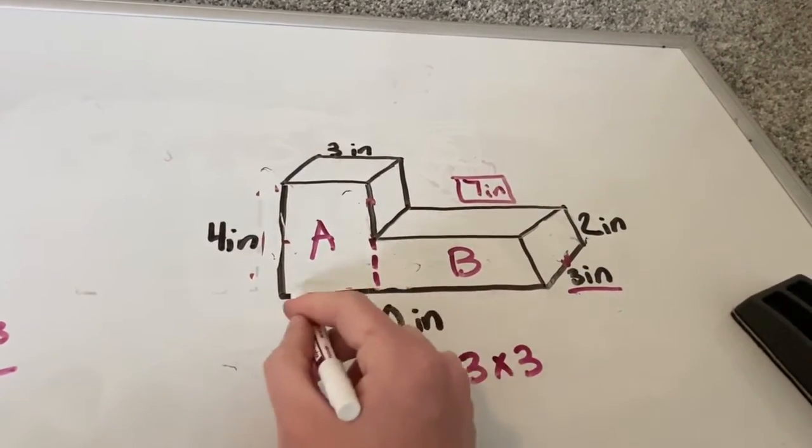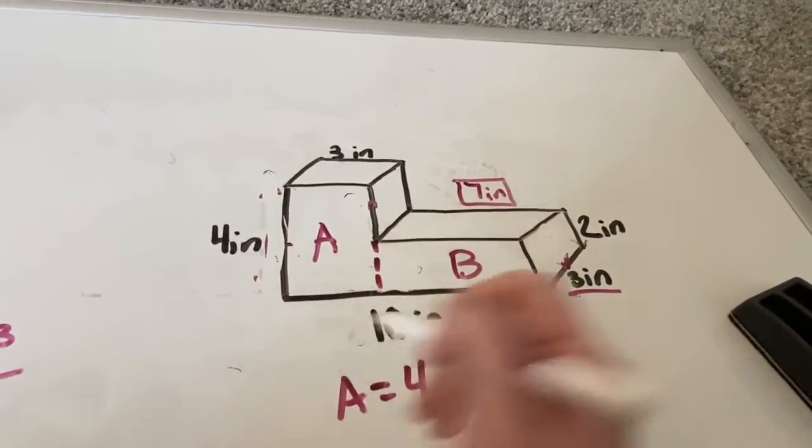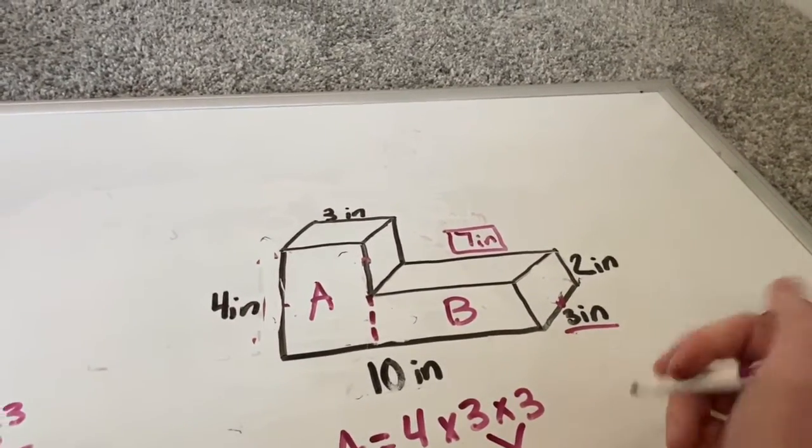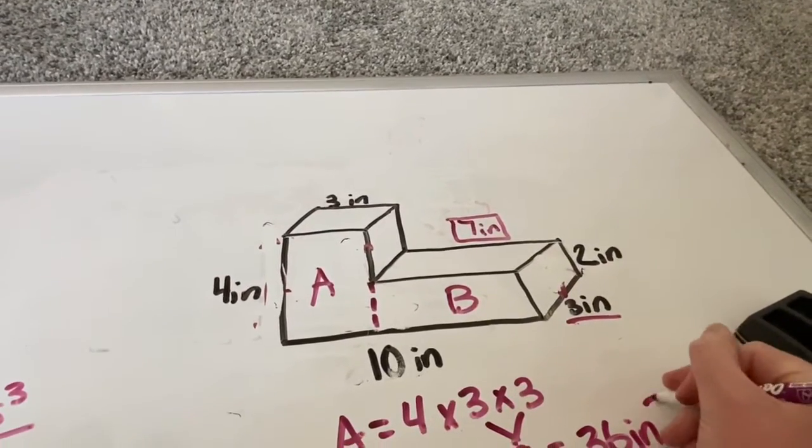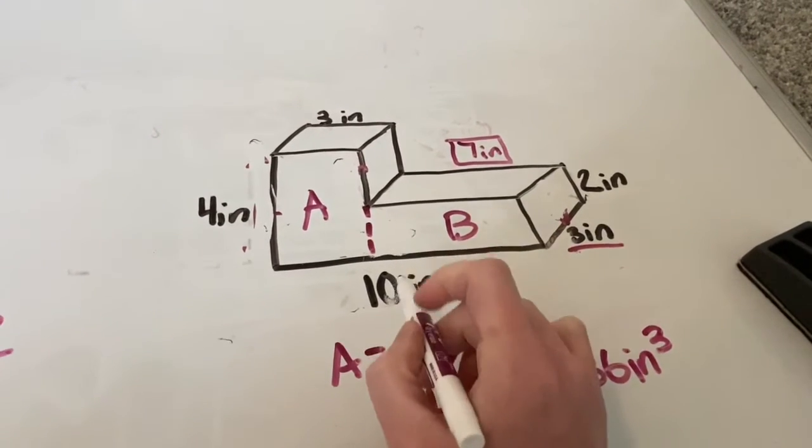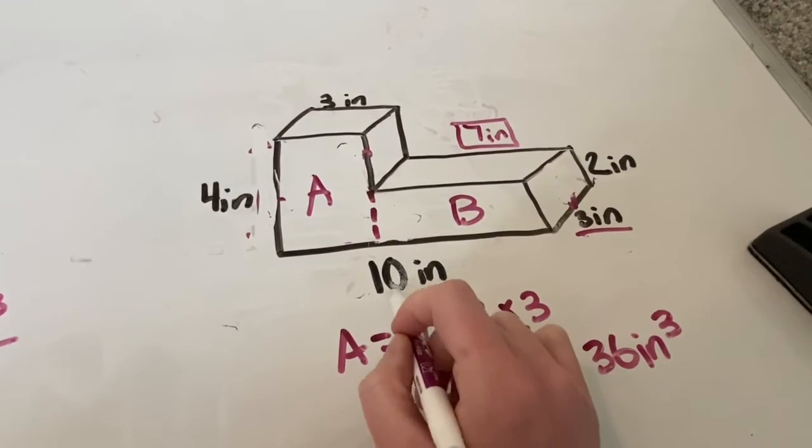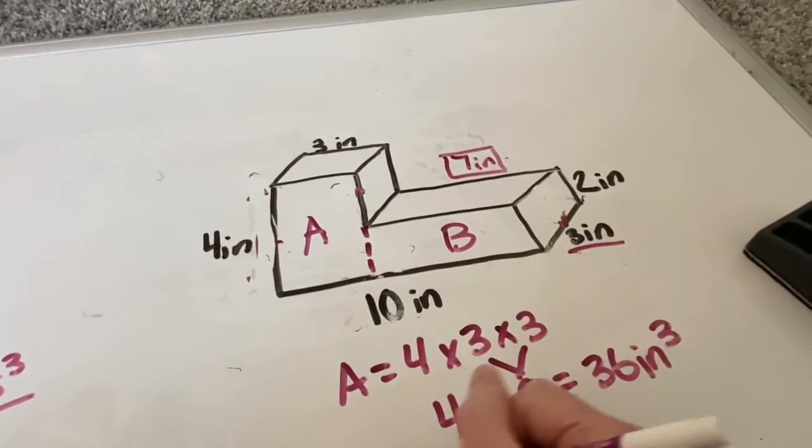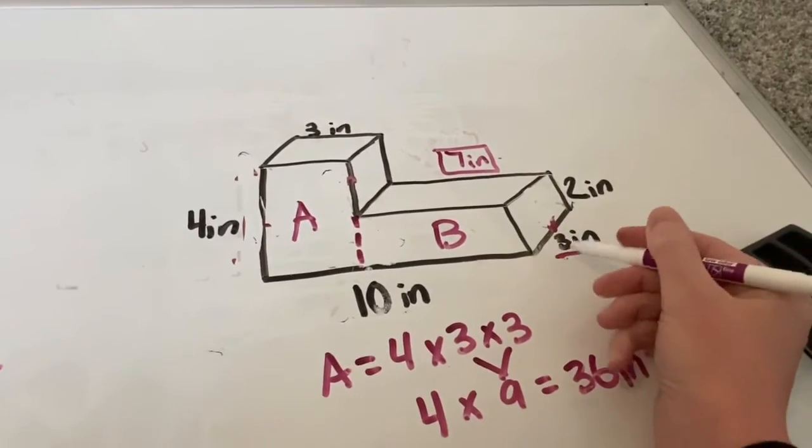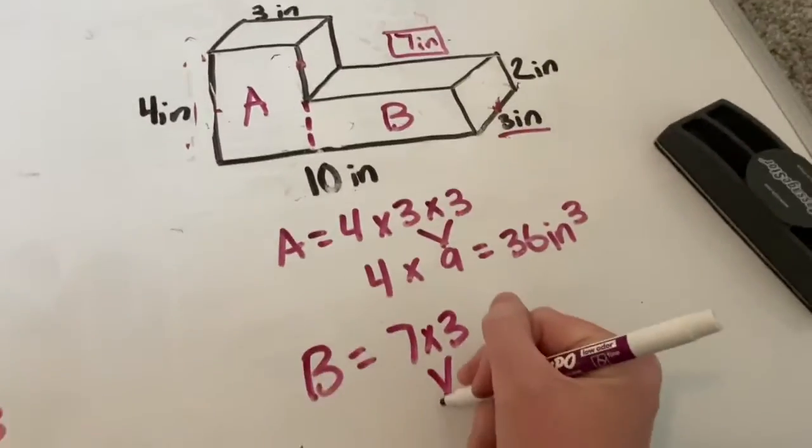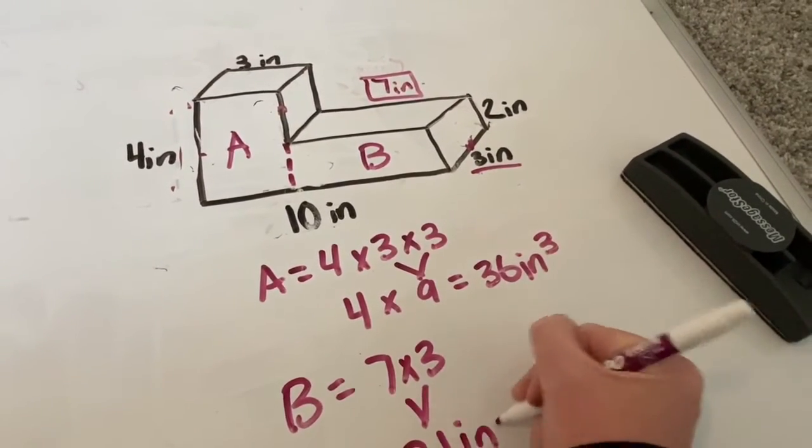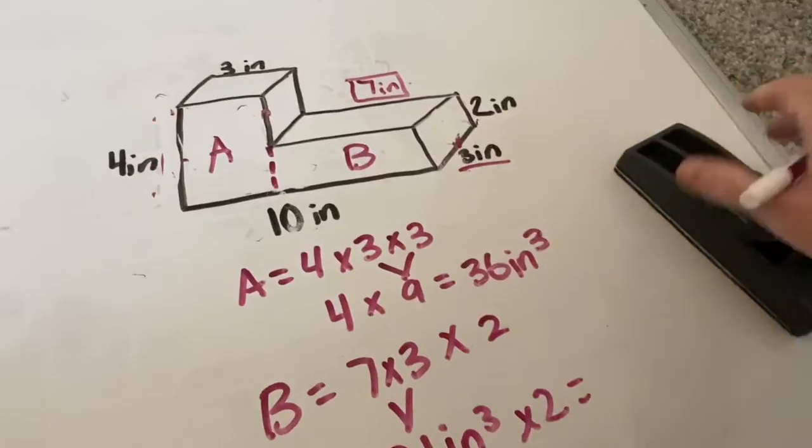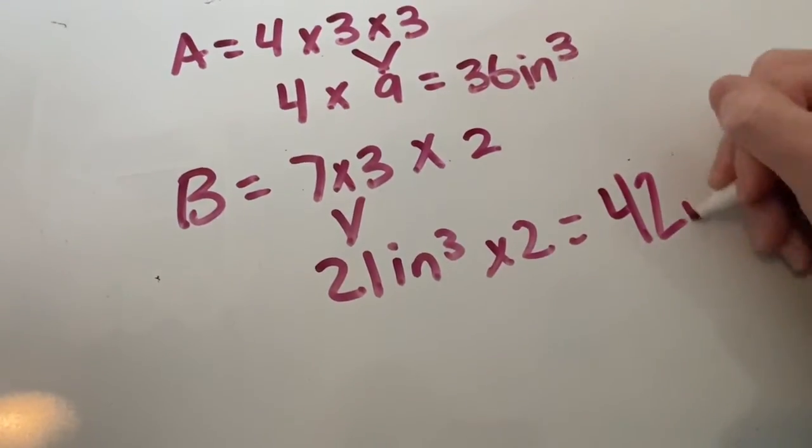So if I'm thinking about the base, the base is going to be three by three, which gives me nine, and nine times four is 36. Now let's move on to figure B. Even though the 10 is right here, I'm not going to let that distract me because I know that's the length of the entire object. I'm going to go up here and see that I know the length of just B is seven. And I know it extends back three inches. That gives me a base of 21 inches cubed. And then I know it has a height of two inches. 21 times two is going to give me 42 inches cubed.